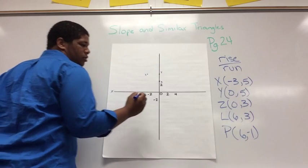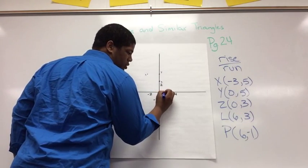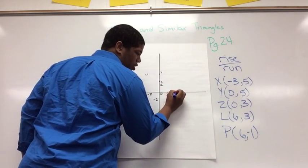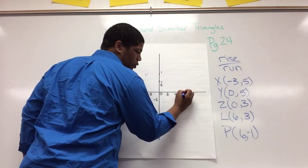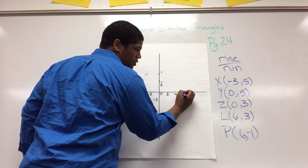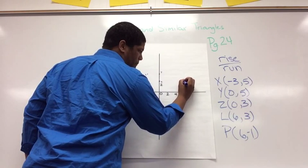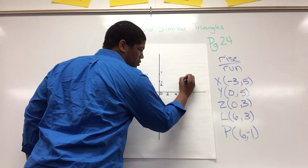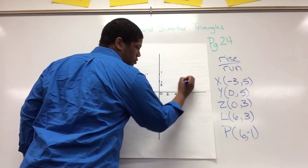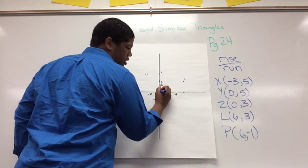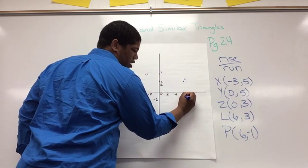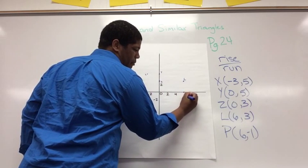Now I have the points L. So that is 6, 1, 2, 3, 4, 5, 6 to the right, because it was positive. 6, 3. Excuse me for putting that point. 1, 2, 3. So here's L. And 6, negative 1. So I'm going to come back to 6, negative 1. So here's P.